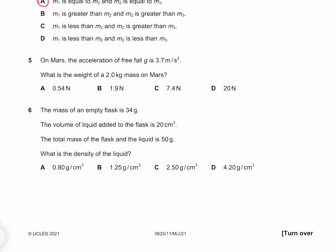On Mars, the acceleration of free fall is 3.7 meters per second per second. What is the weight of a 2 kilogram mass on Mars? The equation for our weight force is force equals our mass times our gravitational acceleration, where our mass is 2 and our gravitational acceleration is 3.7, which gives us 7.4 newtons. And so our answer must be C.